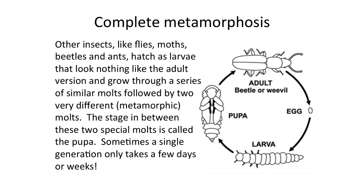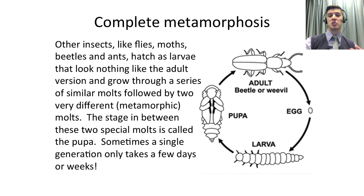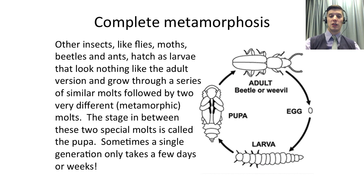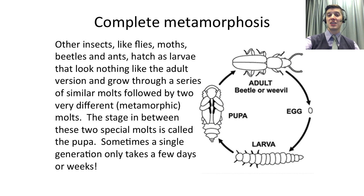When insects undergoing complete metamorphosis hatch from the egg, they look nothing like the adult will. They're either a larva, a grub, a caterpillar, or a maggot. They go through a series of molts getting bigger at each one until they go through a metamorphic molt that changes their shape completely, and they pupate. After that, the pupa turns into an adult. Some species can go through this entire process in a matter of days; some take weeks; and a few species can take decades to complete an entire life cycle — it's really, really variable.